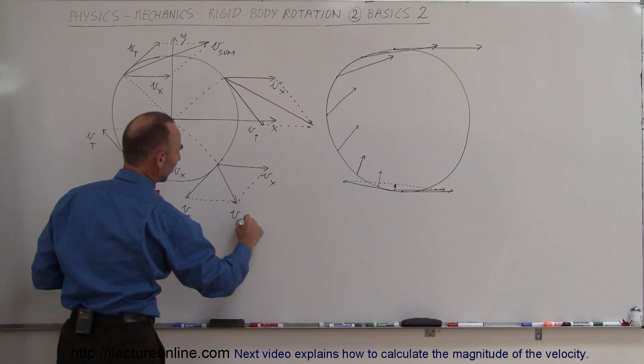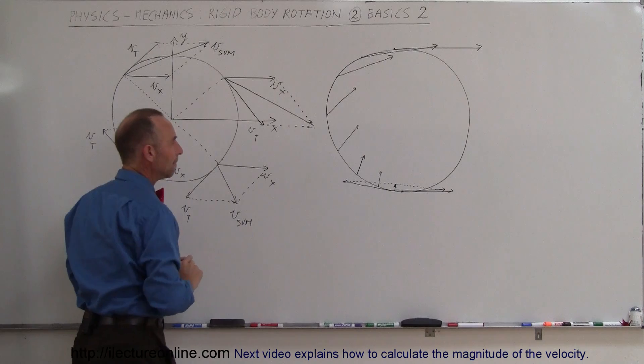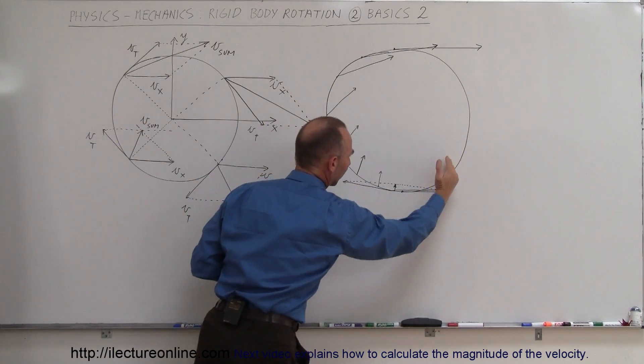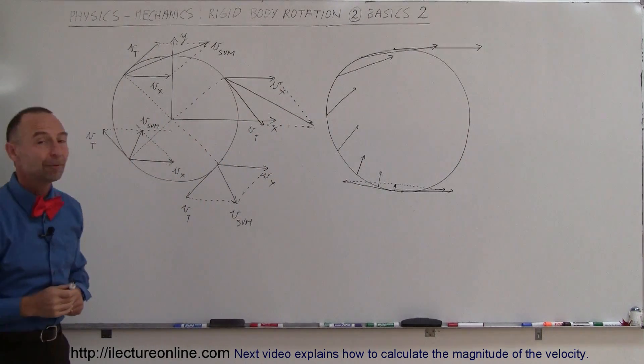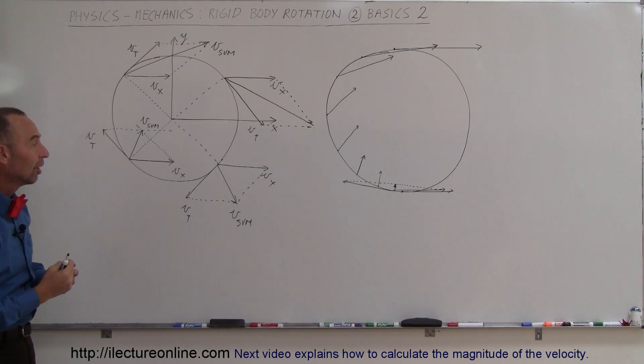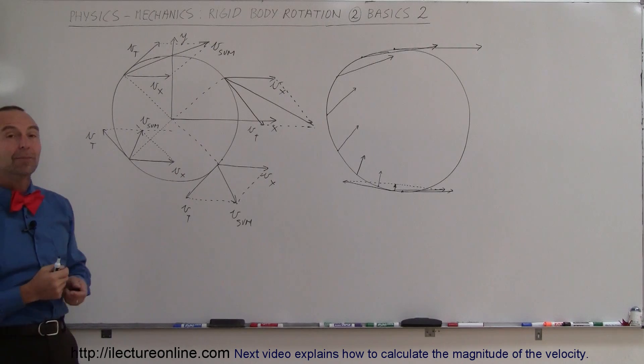You can see how the velocity comes down like that, goes back to zero, switches around, and continues on this side. It gives you a nice visualization of what the velocity looks like on the rim of a tire.